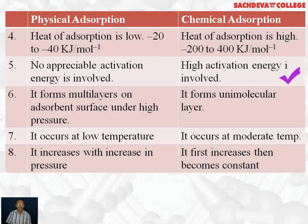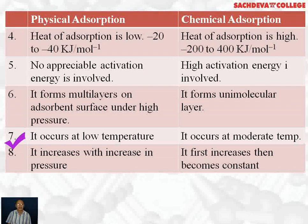In chemical adsorption, high activation energy is involved. In physical adsorption, multi-molecular layers are formed on the adsorbent surface due to high pressure, whereas in chemical adsorption it forms a unimolecular layer. Physical adsorption occurs at low temperature because the force of attraction is weak; if temperature is high, desorption takes place — desorption is the process of removing the adsorbed substance from the adsorbent surface. Chemical adsorption takes place at moderate temperature because it needs activation energy.